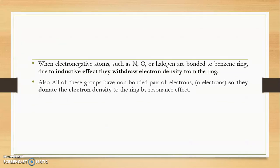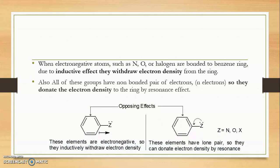Also in the previous lecture we have seen that when nitrogen, oxygen, or halogen atoms are directly bonded to the benzene ring, due to the inductive effect they withdraw the electron density, and due to the resonance effect they donate the electron density. These groups possess both effects, but the effects are opposite, and the net effect depends upon the results of these two effects.